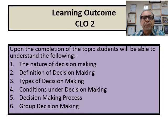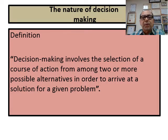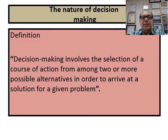What is the nature of decision making? Decision making involves the selection of a course of action from among two or three or more possible alternatives in order to arrive at a solution to a given problem. Simple example: you want to go from here to Kuala Lumpur and there are three ways.